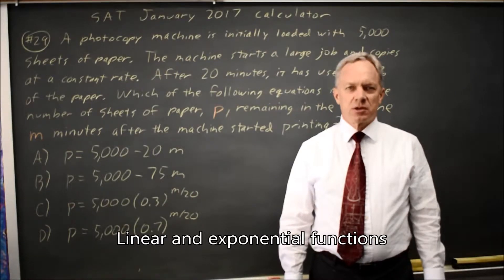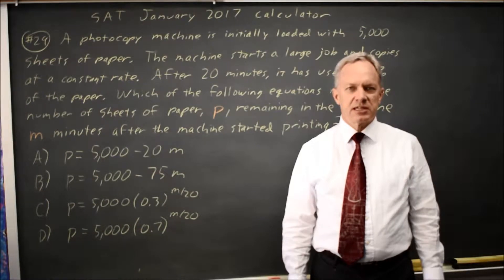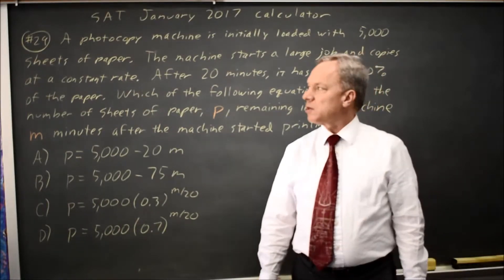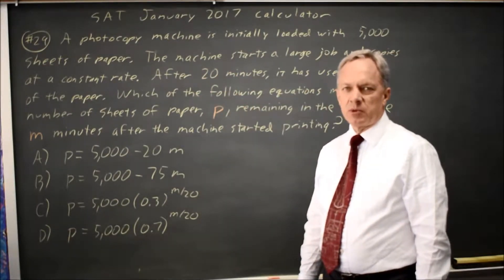This is calculator question number 29 from the January 2017 SAT, which is also practice test 8 from the 2018 version of the College Board prep book. College Board describes a photocopy machine that starts with 5,000 sheets of paper.